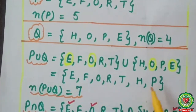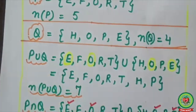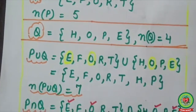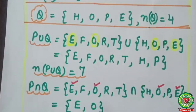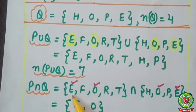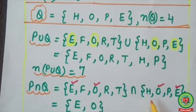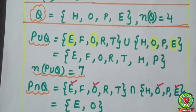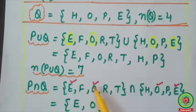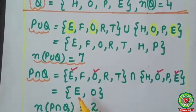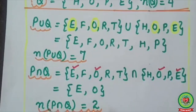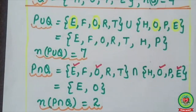Now for P∩Q: intersection means common elements. Set P = {e, f, o, r, t}, intersection symbol, then set Q = {h, o, p, e}. Here e and o appear in both sets, so P∩Q = {e, o}, and its cardinal number is 2.